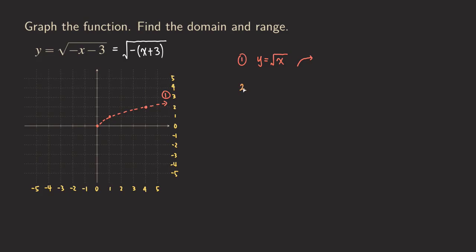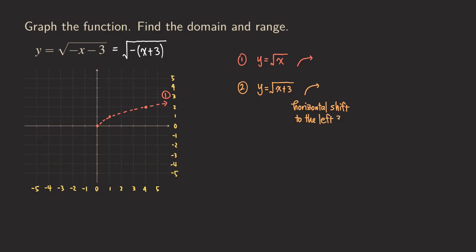We are going to look at y equals square root of x plus 3 — notice there's no negative sign yet, because we are going to apply the reflection later. When we do this, the shape doesn't really change, but we are moving the whole graph three units to the left: a horizontal shift to the left three units.